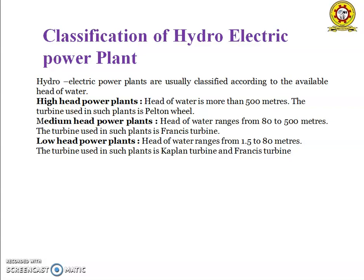In a high head power plant, the head of the water is more than 500 meters, and the turbine used is the Pelton turbine. In a medium head power plant, the head of the water ranges from 80 to 500 meters, and the turbine used is the Francis turbine. In a low head power plant, the head of the water ranges from 1.5 to 80 meters, and the turbines used are the Kaplan turbine and Francis turbine.